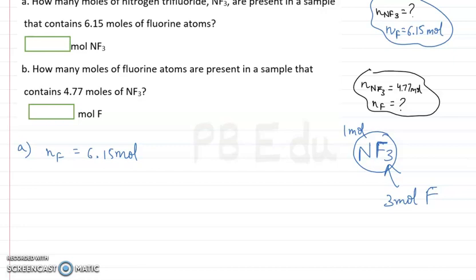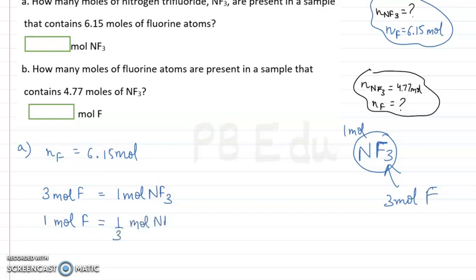We have the relation among them. So 3 moles of fluorine atoms are present in a sample in which there is 1 mole of NF3. We are doing the unitary method, so on the left hand side we put 1, and 3 goes to the denominator, giving us 1/3 mole of NF3.